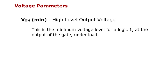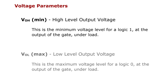High-level output voltage: this is the minimum voltage level for a logic 1 at the output of the gate under load. Low-level output voltage: this is the maximum voltage level for a logic 0 at the output of the gate under load.